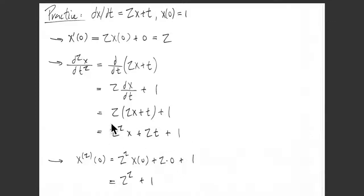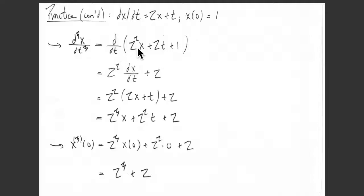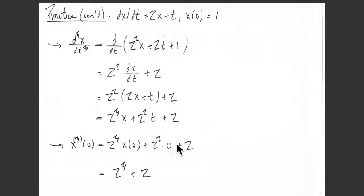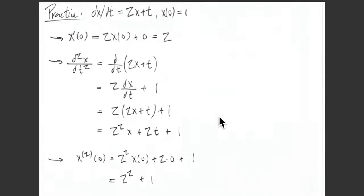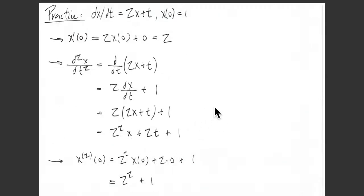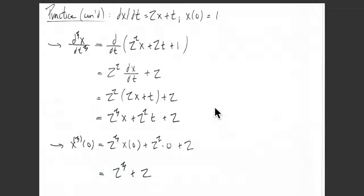We use the second derivative to compute the third. The third derivative is the derivative of our second derivative expression, giving 2²(dx/dt) + 2. Substituting dx/dt = 2x + t yields 2³x + 2²t + 2. Evaluating at t = 0 gives 2³·1 + 2 = 2³ + 2. Comparing to the second derivative, we can start to see similarities in the pattern.